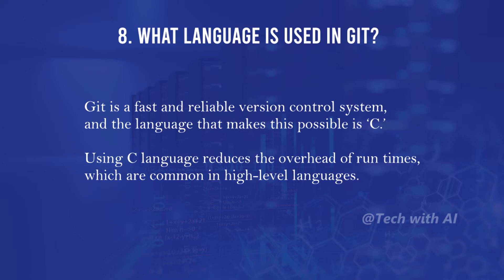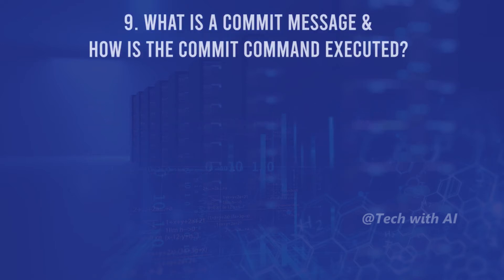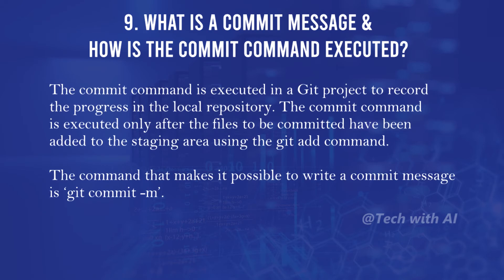What is a commit message and how is the commit command executed? The commit command is executed in a Git project to record the progress in the local repository. The commit command is executed only after the files to be committed have been added to the staging area using the git add command. The command that makes it possible to write a commit message is git commit -m.